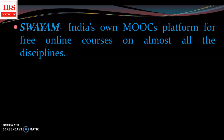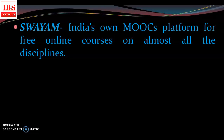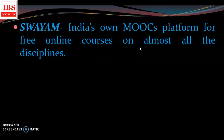Earlier India didn't have any MOOCs platform. MOOC means Massive Open Online Course. Massive means available for a large number of people. Open means available for all — there is no eligibility restriction; most people are eligible to do these courses. Online means they are available online and can be accessed with the help of internet. If there are assignments, tests, or discussions, everything is done on the online platform. So Swayam is an online platform.